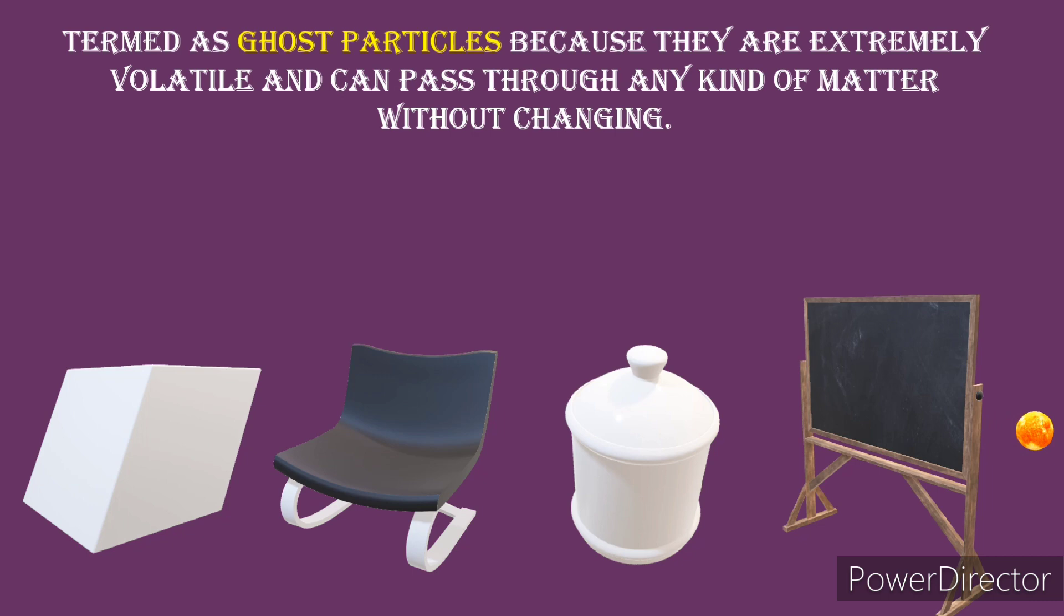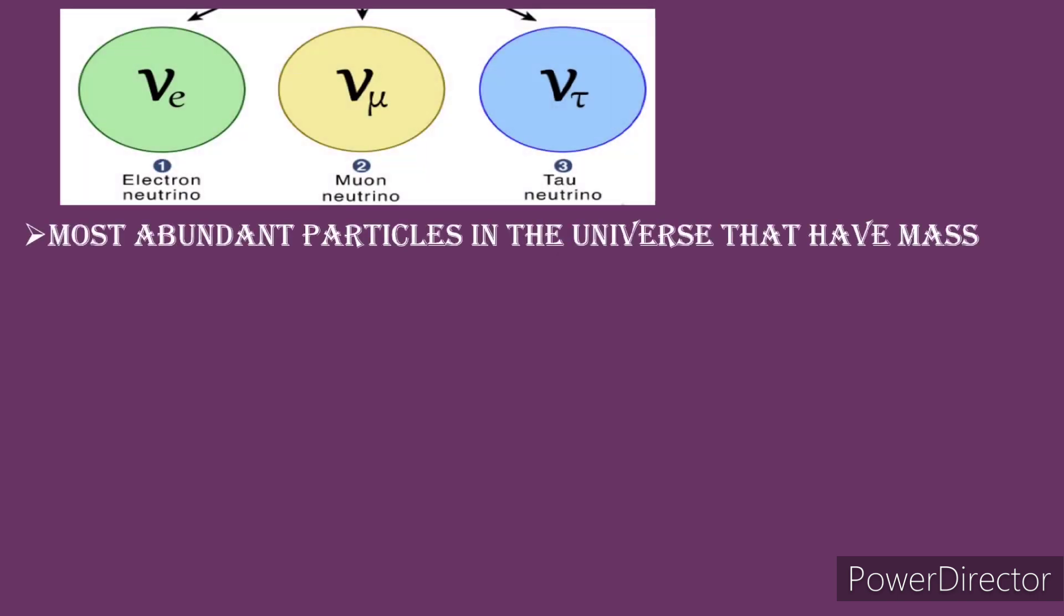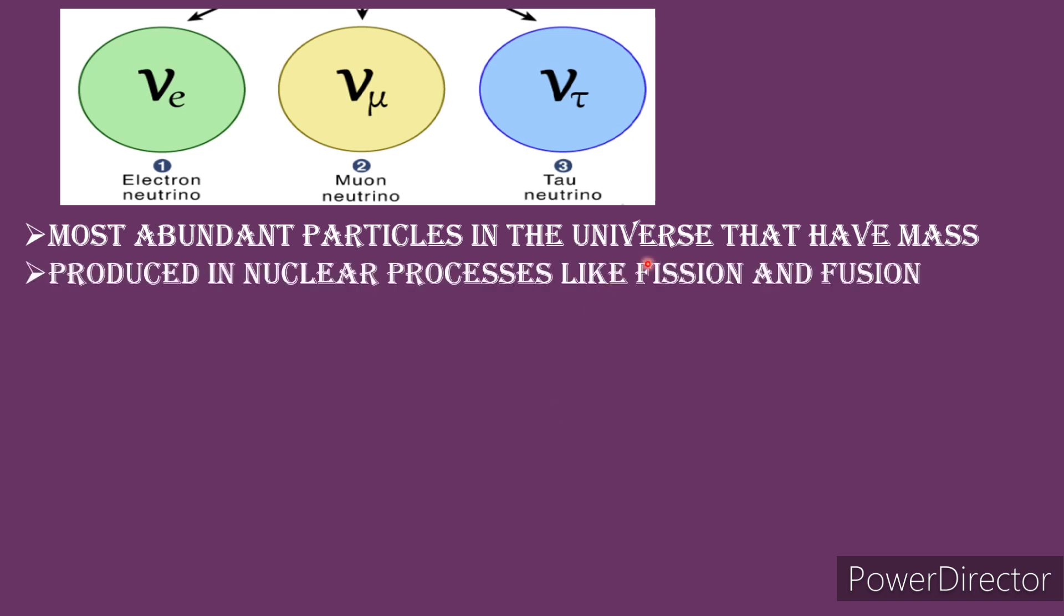Some important points about neutrinos: in this universe, they are the most abundant particles that have mass. The most abundant particles with mass.